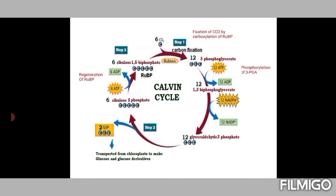The 3-phosphoglycerate formed is converted to 1,3-bisphosphoglycerate by phosphorylation, with expenditure of 12 molecules of ATP. This short-lived compound is then immediately reduced and dephosphorylated to give 12 molecules of glyceraldehyde 3-phosphate (G3P), involving utilization of both ATP and NADPH produced during the light reaction.